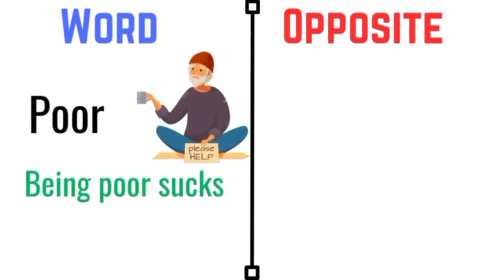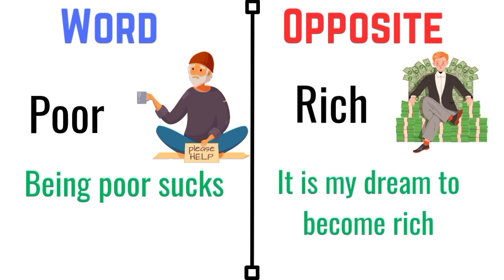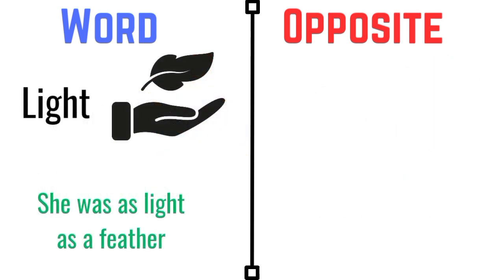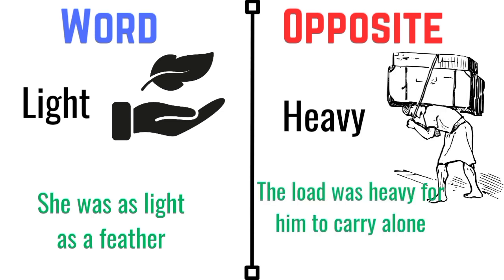Poor. Being poor sucks. The opposite of poor is rich. It is my dream to become rich. Light. She was as light as a feather. The opposite of light is heavy. The load was heavy for him to carry alone.